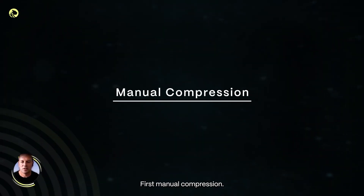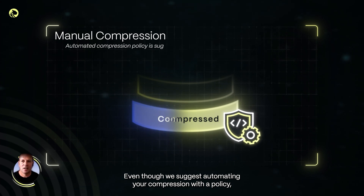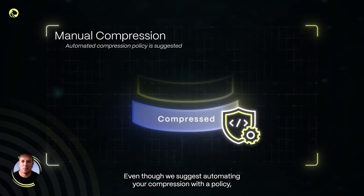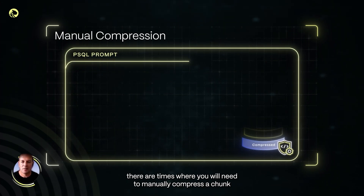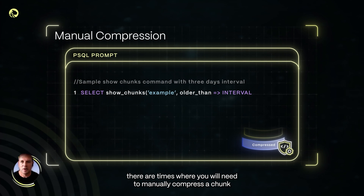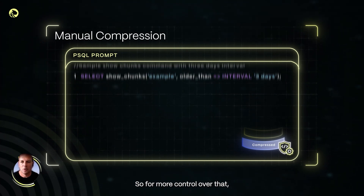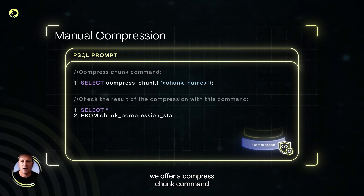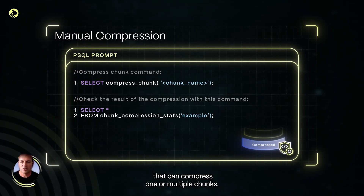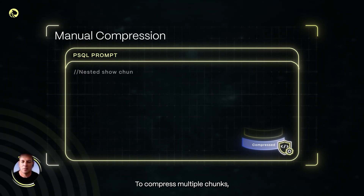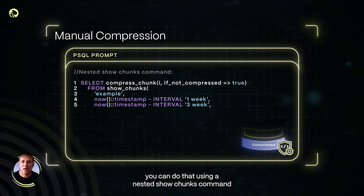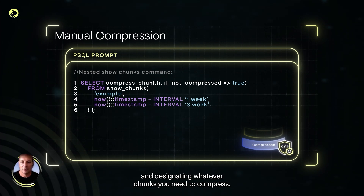First, manual compression. Even though we suggest automating your compression with a policy, there are times where you will need to manually compress a chunk or a group of chunks. For more control over that, we offer a compress_chunk command that can compress one or multiple chunks. To compress multiple chunks, you can do that using a nested show chunks command and designating whatever chunks you need to compress.